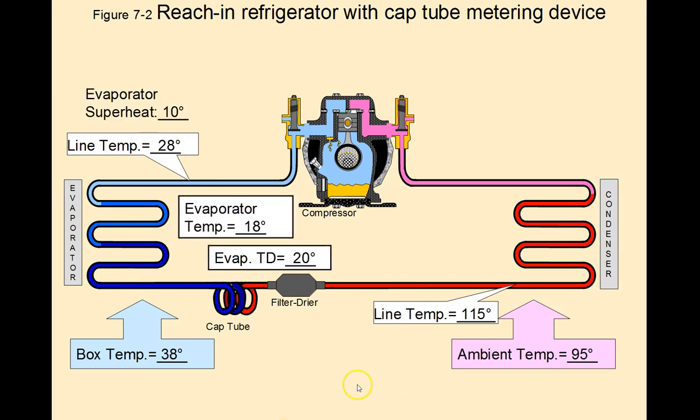So with a box temp of 38 degrees Fahrenheit, and you read on your gauges that you have an evaporator temp of 18 degrees, you're going to subtract that evaporator temp of 18 degrees from the 38 degree box temp for an evaporator TD of 20 degrees Fahrenheit, and your technician rule of thumb sheet will show you that that is a normal evaporator TD.